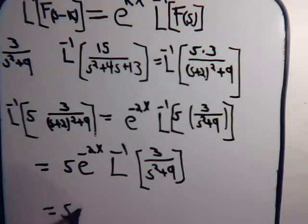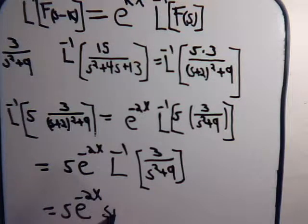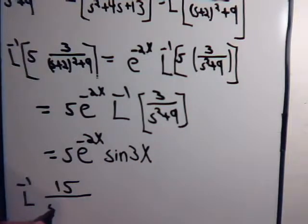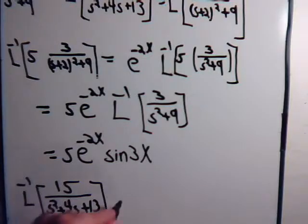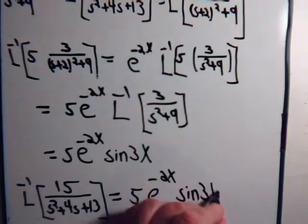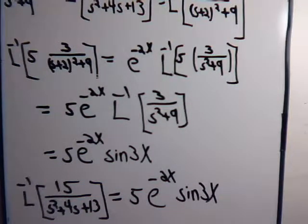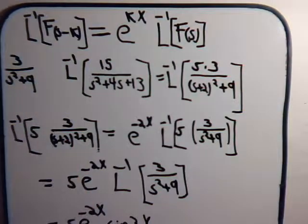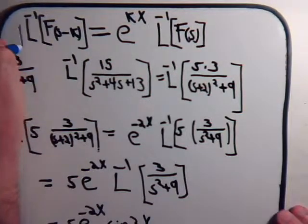So this is 5 e to the minus 2x times the sine of 3x. So we'll start up here. Inverse Laplace transform of 15 divided by s squared plus 4s plus 13 equals 5 times e to the minus 2x times the sine of 3x. And again, the way we were able to determine that was realizing this relationship here that we had derived in the last video.